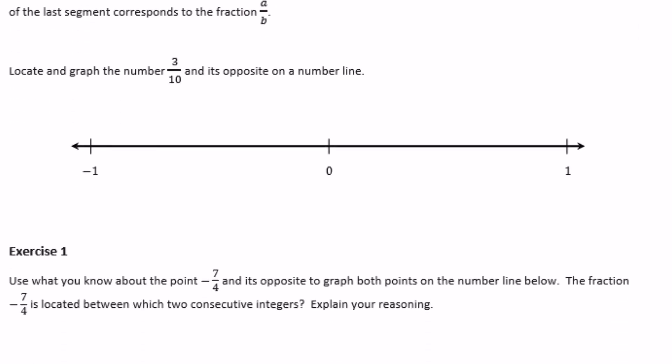Locate and graph 3 tenths and its opposite on a number line. Instead of separating the number line into whole numbers, we're working with fractions. Between 0 and 1, I'll section it off into tenths — and the same for the negative side. 3 tenths is 1, 2, 3 marks over, and the opposite, negative 3 tenths, is 3 marks in the other direction.